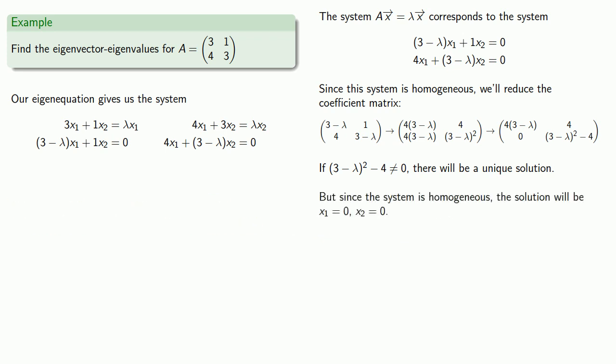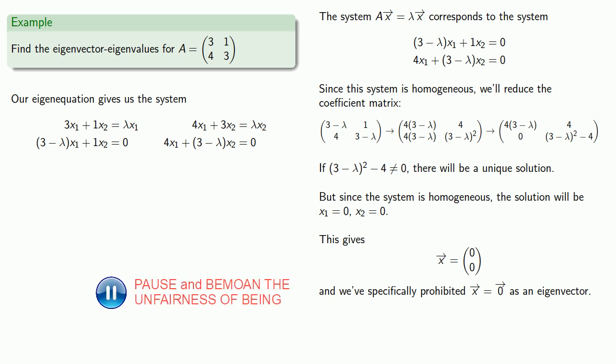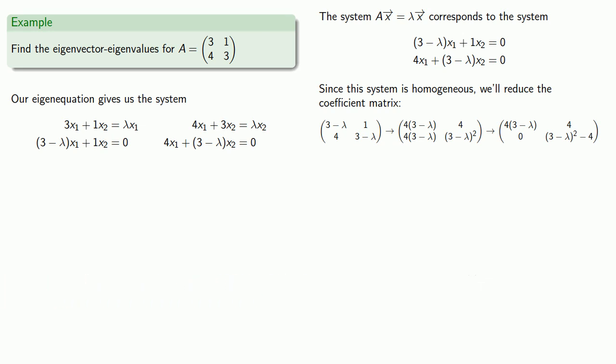But, since the system is homogeneous, the solution will have to be x1 equals 0, x2 equals 0, and this gives us our vector x being the 0 vector, and we've specifically prohibited x equals 0 as an eigenvector. To get a non-zero eigenvector, it's necessary that 3 minus lambda squared minus 4 be equal to 0.